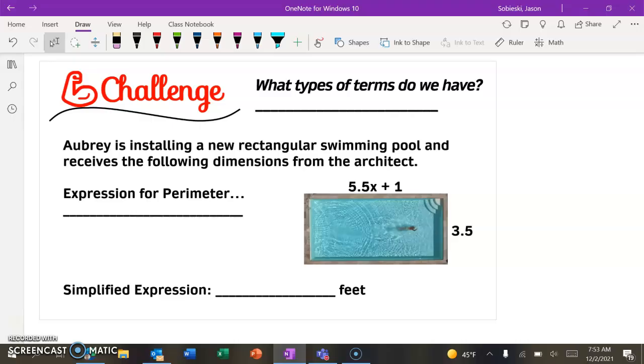All right, to wrap things up, we have a quick challenge. So let's say Aubrey is installing a new rectangular swimming pool. And she receives these dimensions. We want to write an expression for the perimeter. So we have x terms and we have constants in this one. So same as the other examples. Well, if the right side is 3.5, the left side must also be 3.5. And if the top is 5.5x plus 1, so is the bottom. So taking this, we know perimeter means add up all the sides. So pause the video, see if you can come up with what the expression would be, and then we're going to look at how to simplify it.